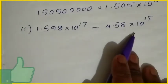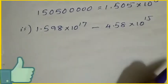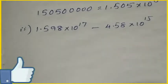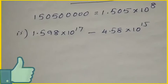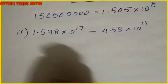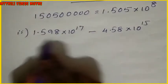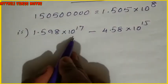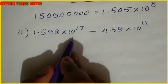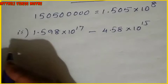The result here is 4.58 into 10 power 15. Now we will do the same thing for the next problem. This is again scientific notation and we have to write it in decimal place.